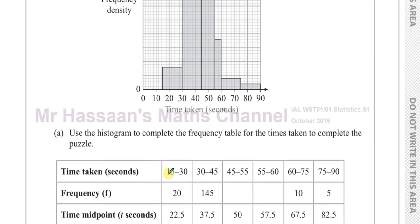The time intervals given are between 15 and 30 seconds, between 30 and 45 seconds, and so on. There seem to be no gaps here, so there's no problem. You always check the limits given — if there were gaps, for example 15 to 29 and then 30 to 45, you'd need to extend the limits by 0.5 each way. But here there are no gaps. The frequencies are given except for two, which we need to find.